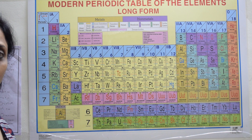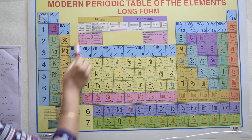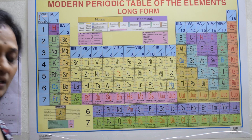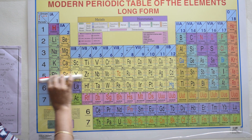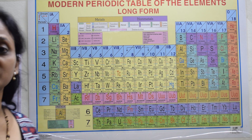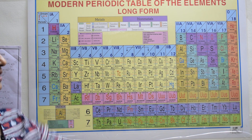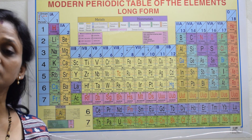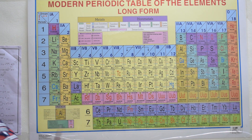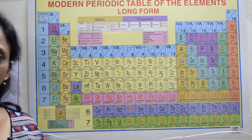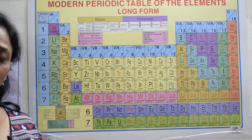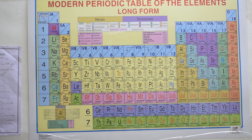The 18 vertical columns are called groups, and the 7 horizontal rows are called periods. Remember that: 18 vertical columns are called groups, and 7 horizontal rows are called periods.